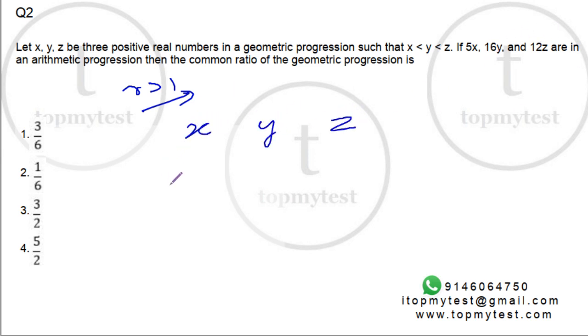It is given that 5x, 16y, and 12z are in arithmetic progression. What is the common ratio? Now, common ratio has to be more than one. So this is out, this is out. That leaves us with two choices.